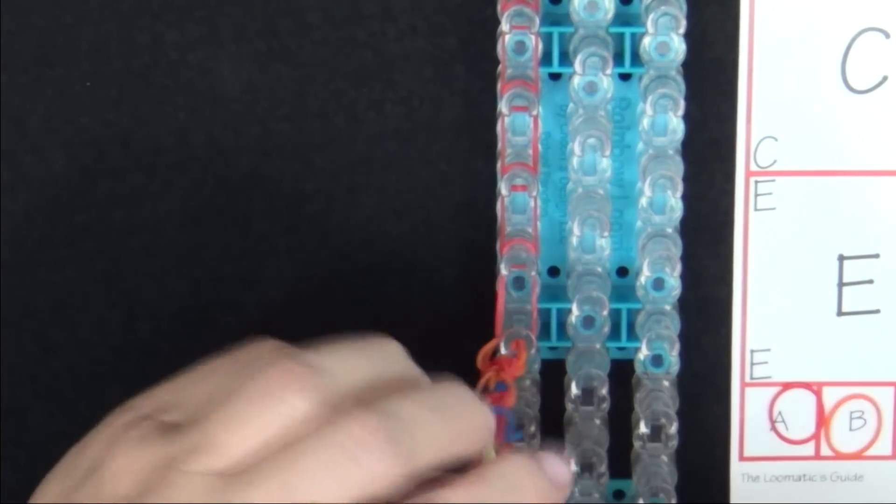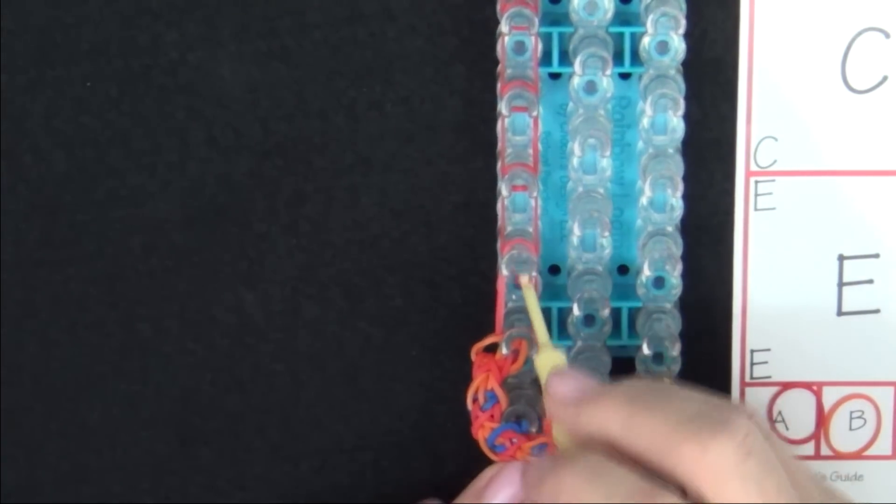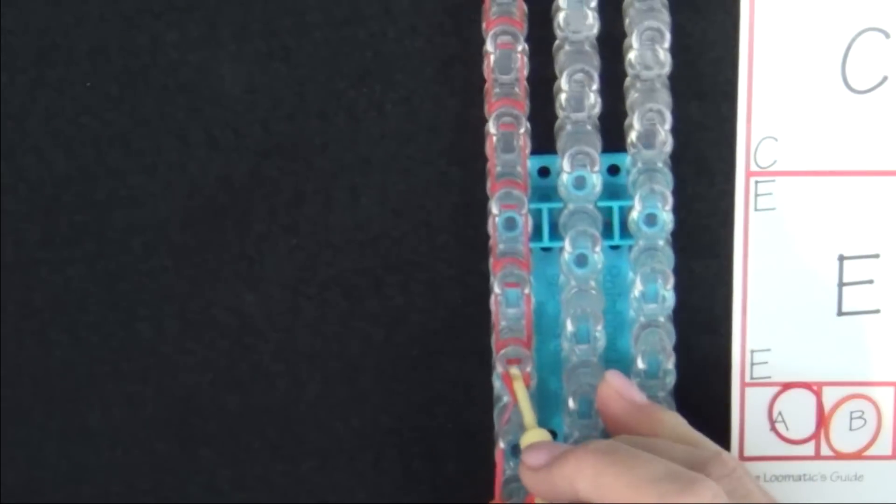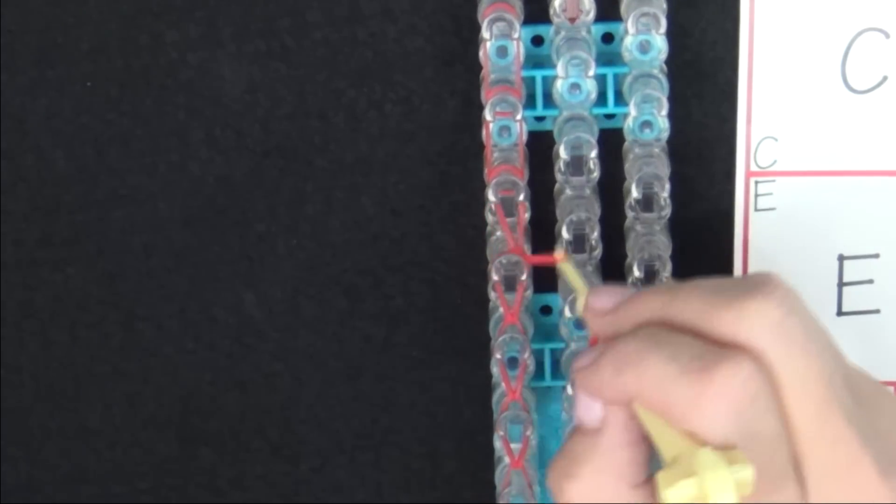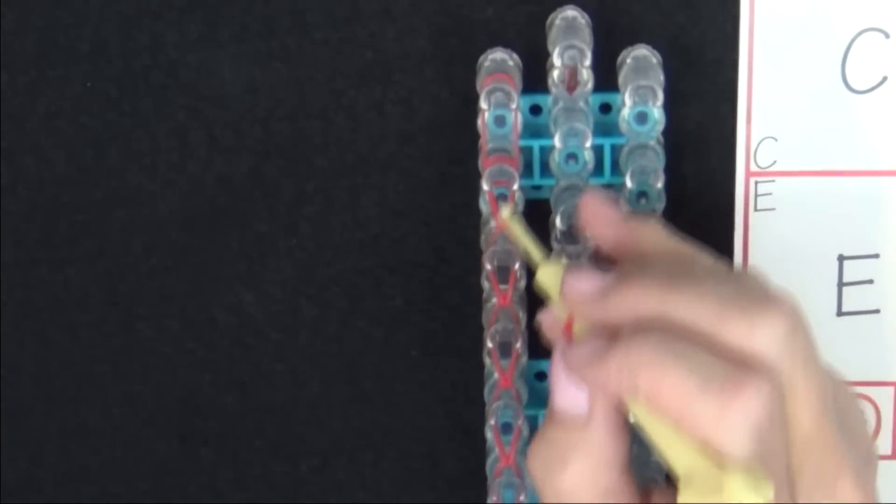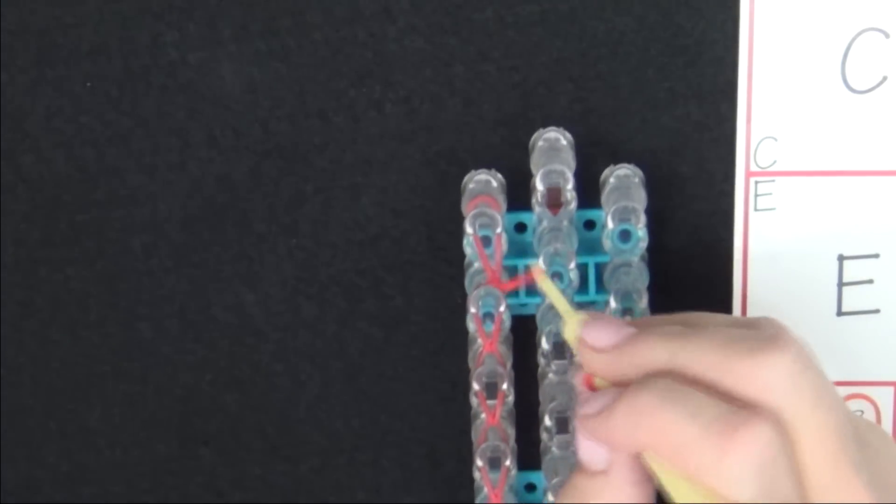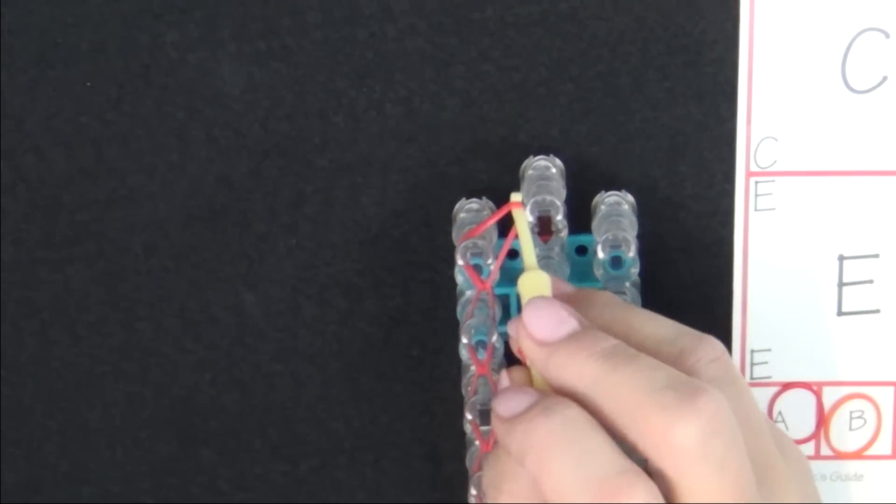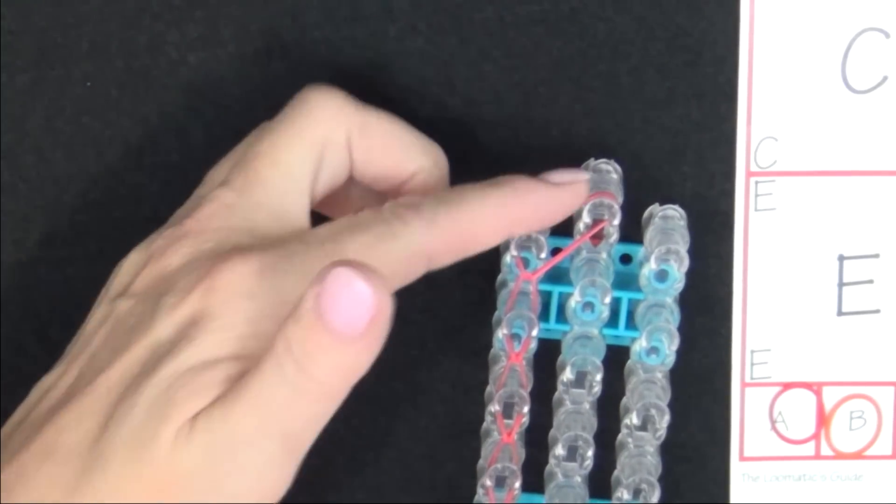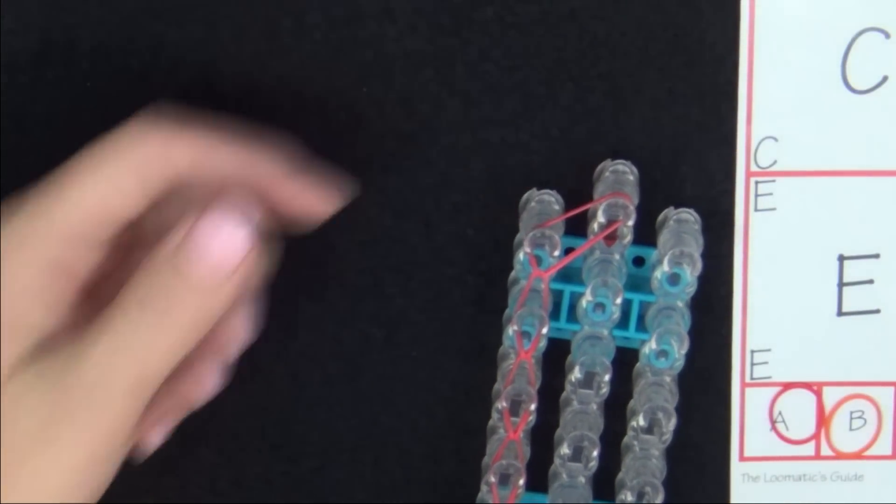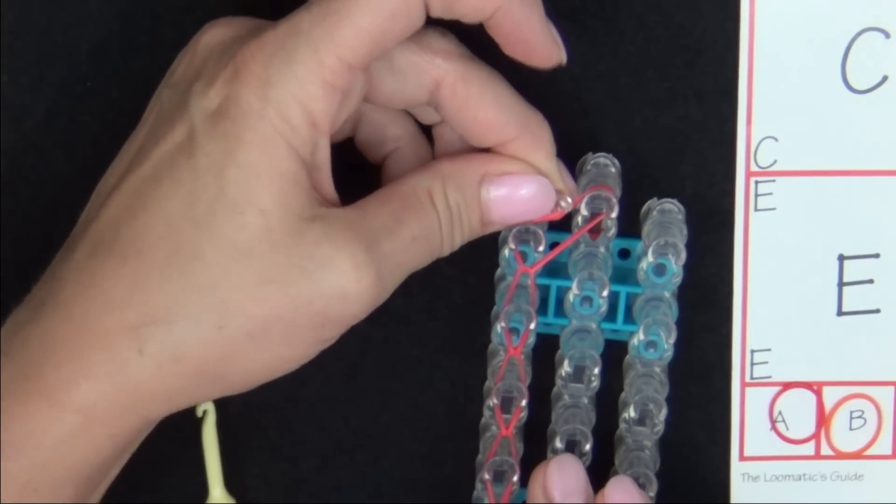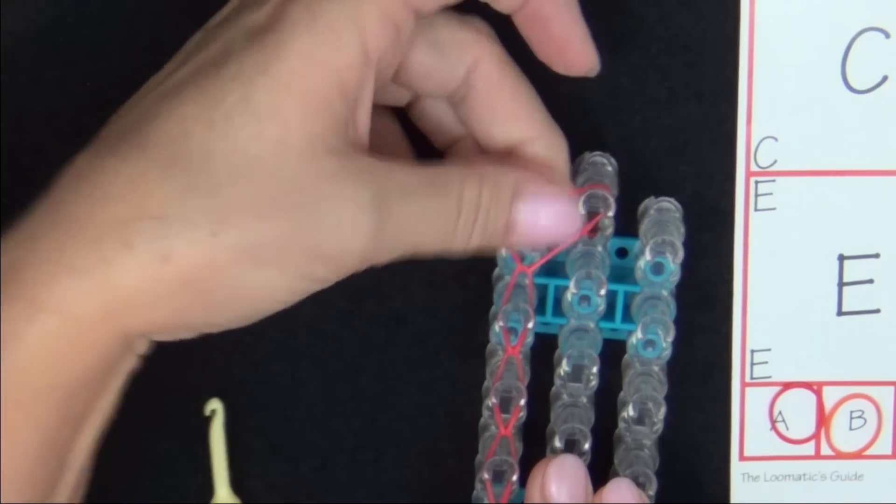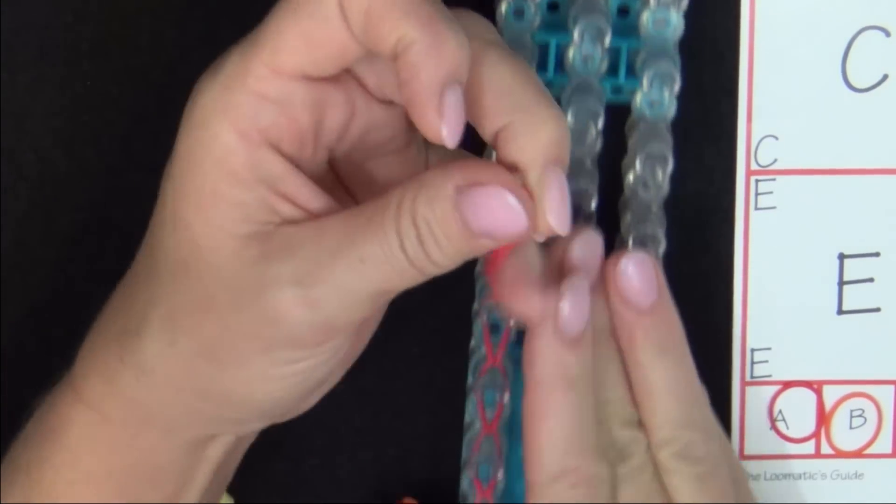And then you'll loop your bands. Once you loop the last band, you'll pull that to the center pin. And that creates an area where you can attach your C-clip. Grab your C-clip so that the open side is facing forward. Secure that on the band. And then lift your extension from the loom.